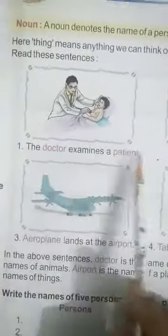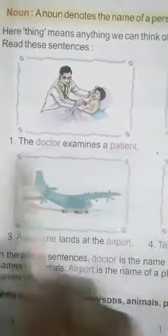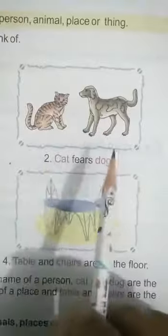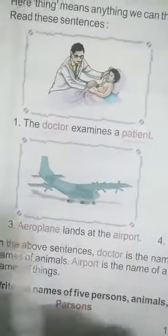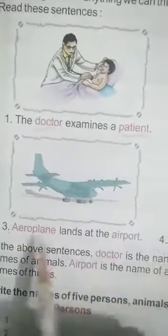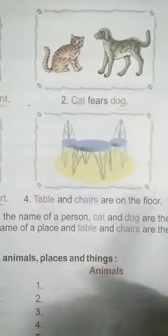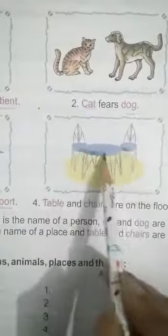Read these sentences. Let's read. Here what you can see, there is a doctor, there is a patient. The doctor examines a patient. What is the patient? What is the patient? He is examining his patient. The doctor examines a patient. Here if you are looking at the doctor or patient that is written in bold. Second one, cat fears a dog. Cat fears a dog. Cat fears a dog. So you can see these two. So here, aeroplane lands at the airport. Where? Aeroplane lands at the airport. So this and this. Now we will explain it all down. And table and chairs are on the floor. Table and chairs are where? Table and chairs.